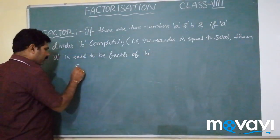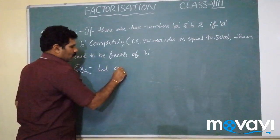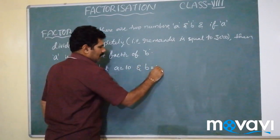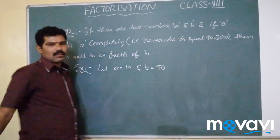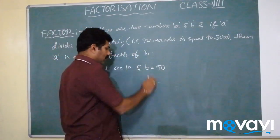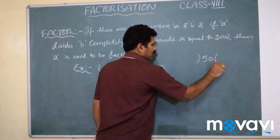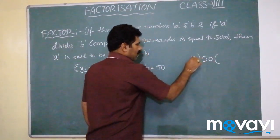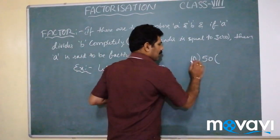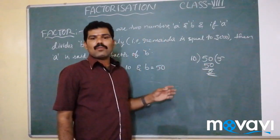Let me take an example. Let A equal 10 and B equal 50. We have to divide B with A. So 10 has to divide 50. 10 fives are 50, and the remainder is 0.